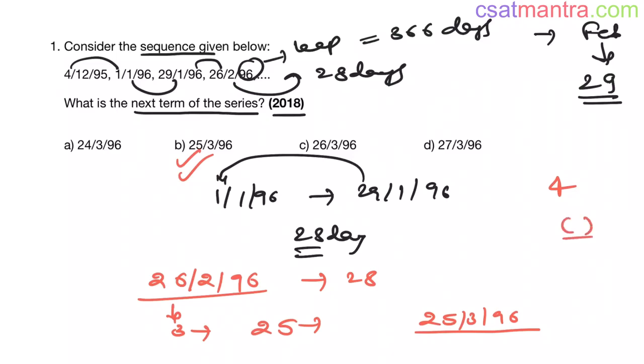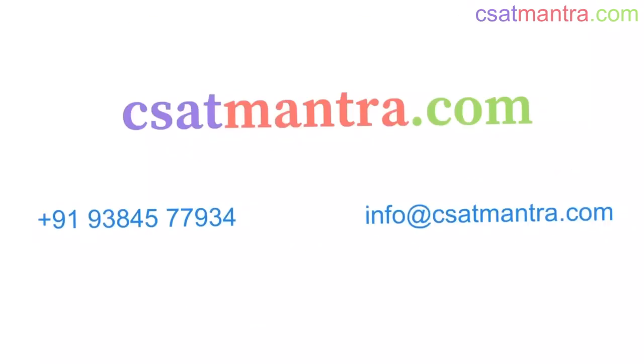To find whether a year is a leap year or not, just divide the last two digits of a year by 4. If the remainder is zero, it is a leap year, otherwise it's not a leap year. See, 96 is divisible by 4, the remainder is zero, so a year ending with 96 is a leap year.